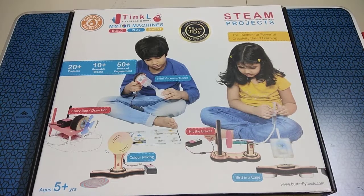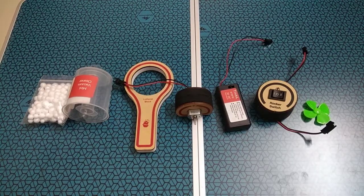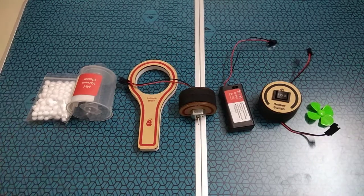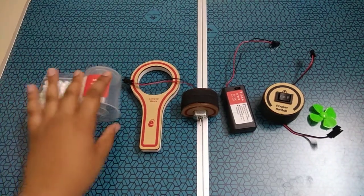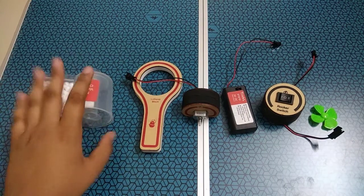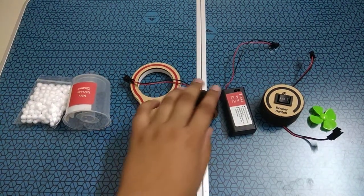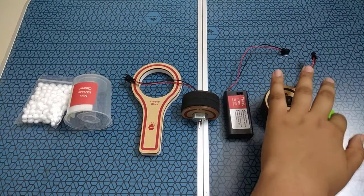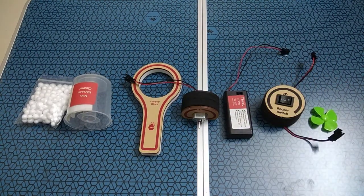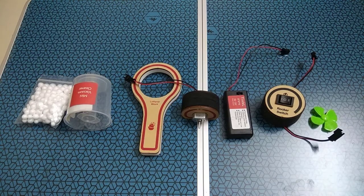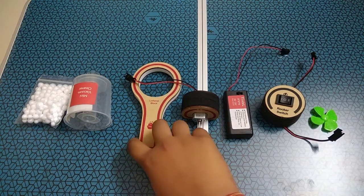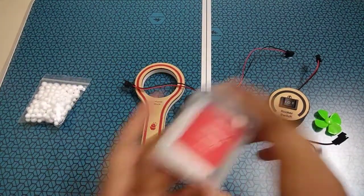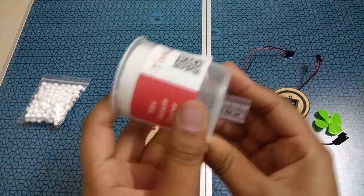Let's begin. The materials required are thermocol balls, beaker with a syringe, lollipop stick, motor bit, battery holder, rocker switch, and a small fan. So let's begin, push the syringe inside the beaker.